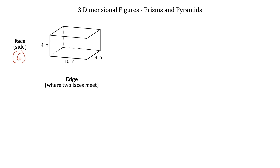We also have the edges — that's where two faces are going to meet. Each of these lines right here would technically be considered an edge because it is where two faces are coming together. If we count those, we would see we have 12 specifically for this shape. We also have something called a vertex, which is simply a corner — any of these corner pieces where faces come together and make a point. We call that a vertex, or the plural: vertices.